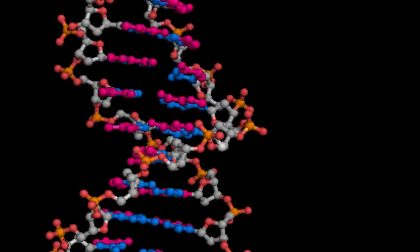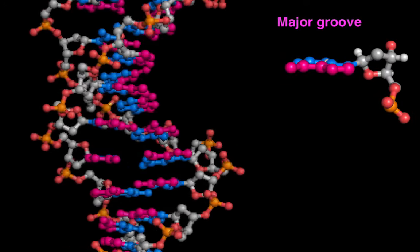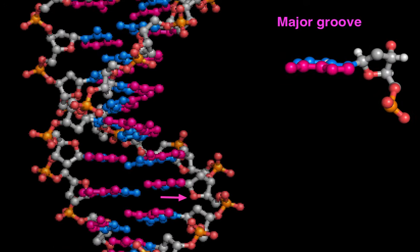Looking at the right backbone, we can now see that in the major groove, the deoxyribose always points its ring oxygen down. This is the opposite orientation compared with the complementary left backbone.